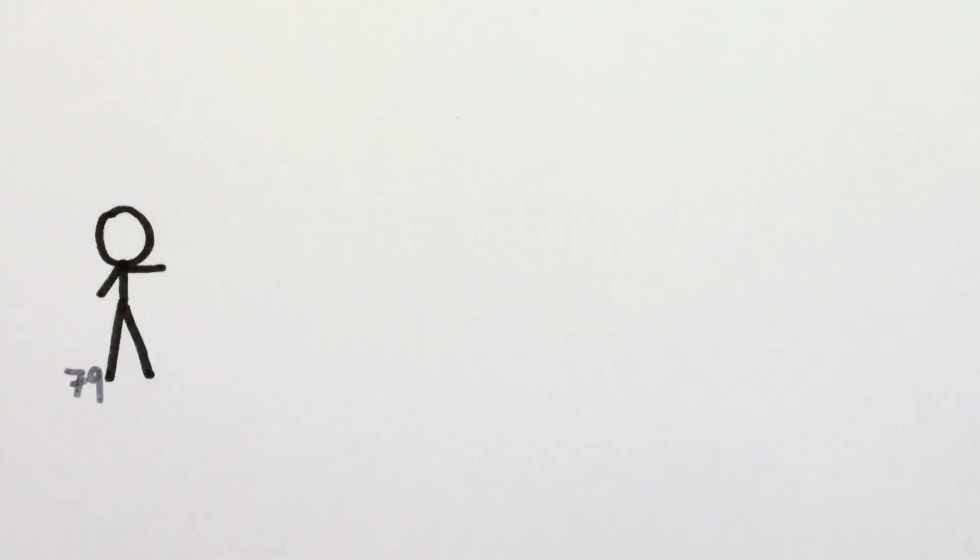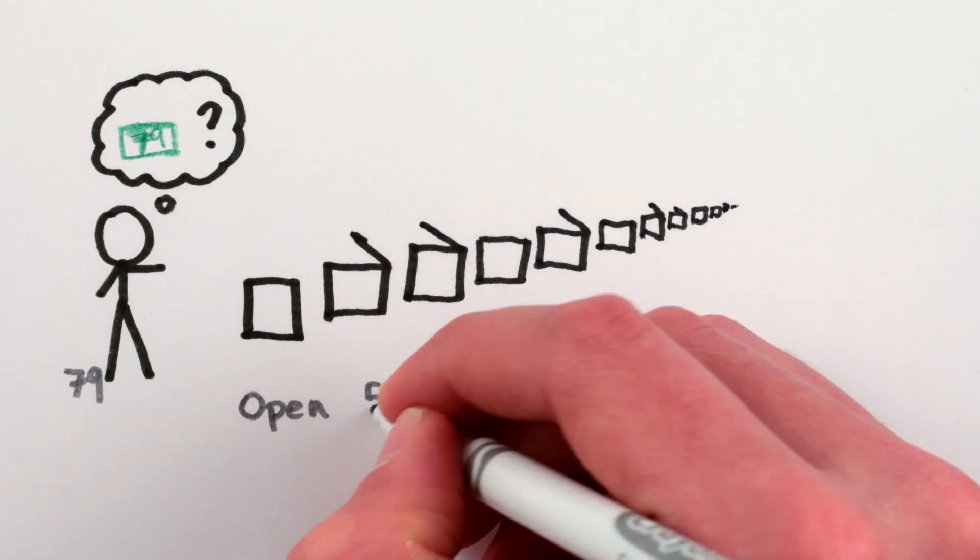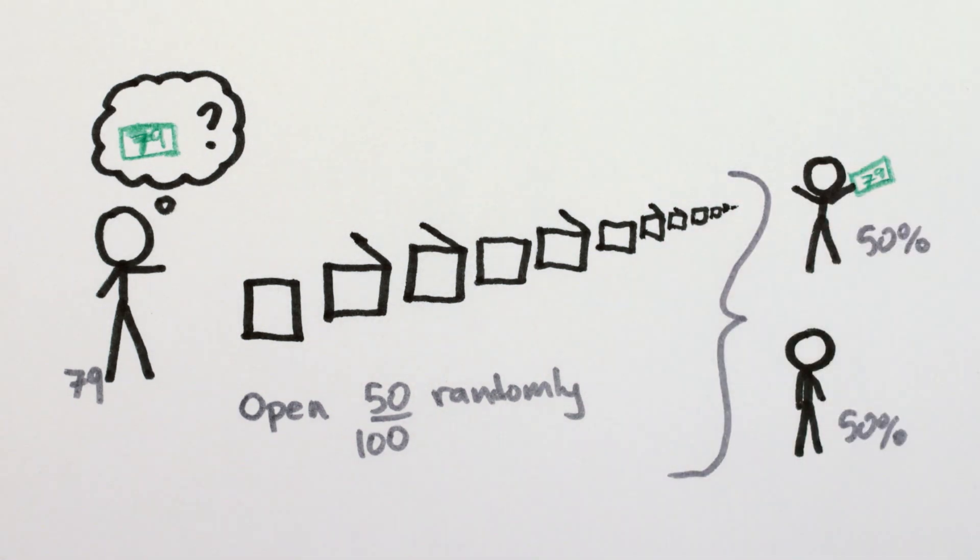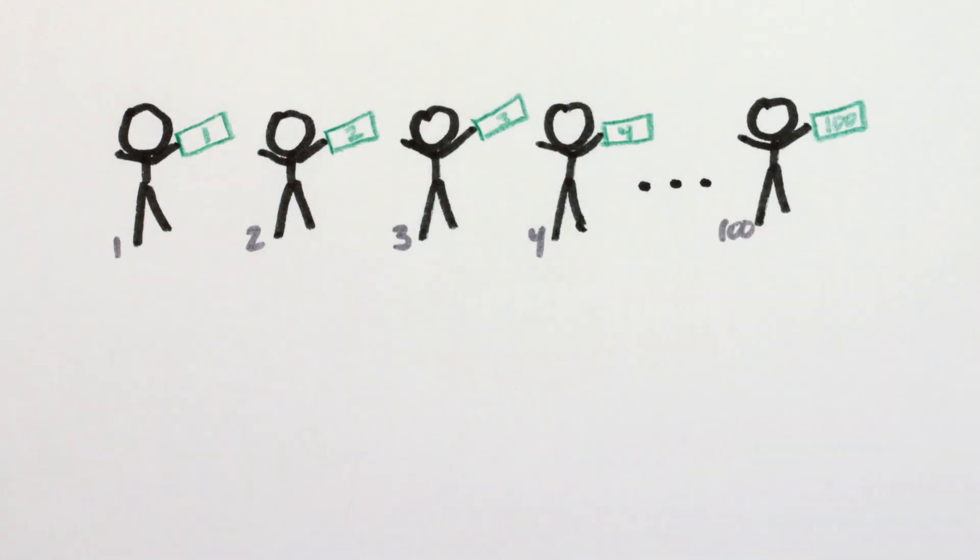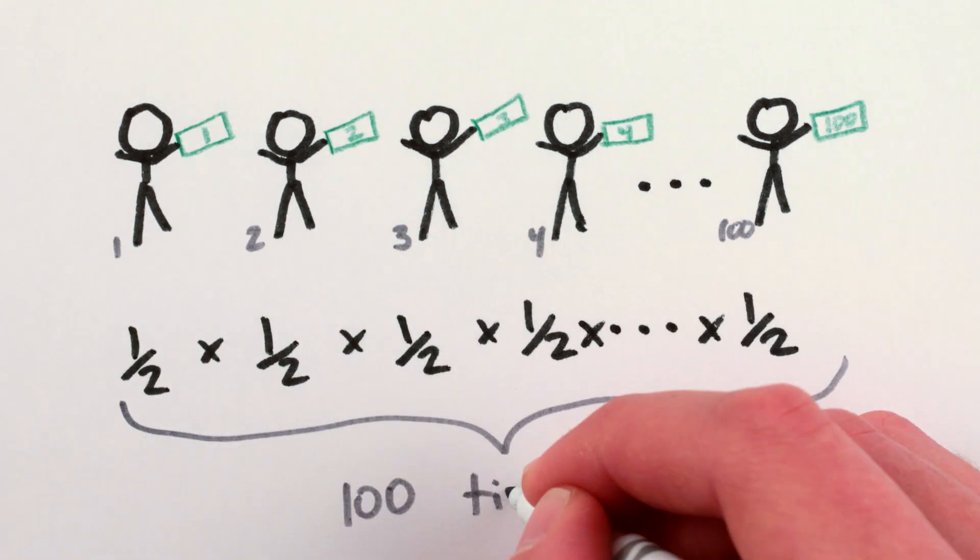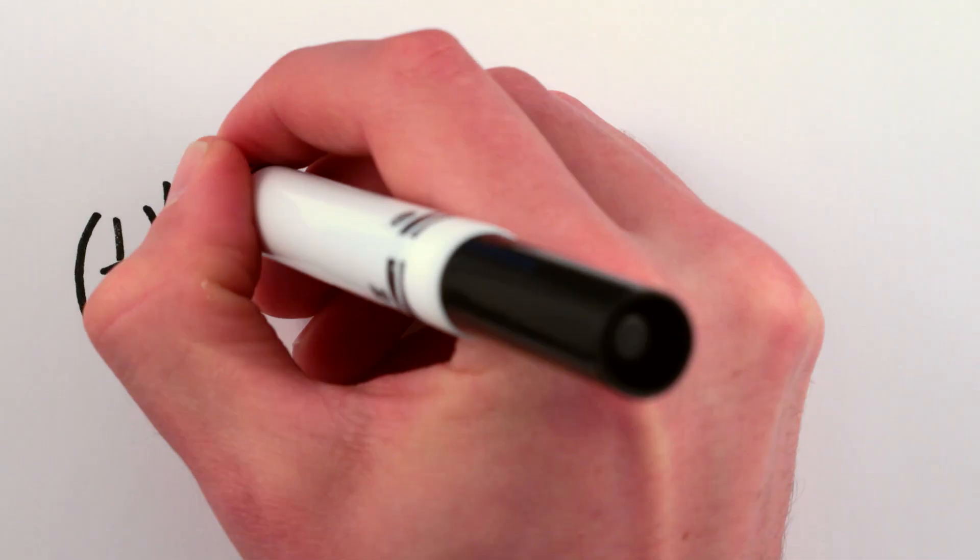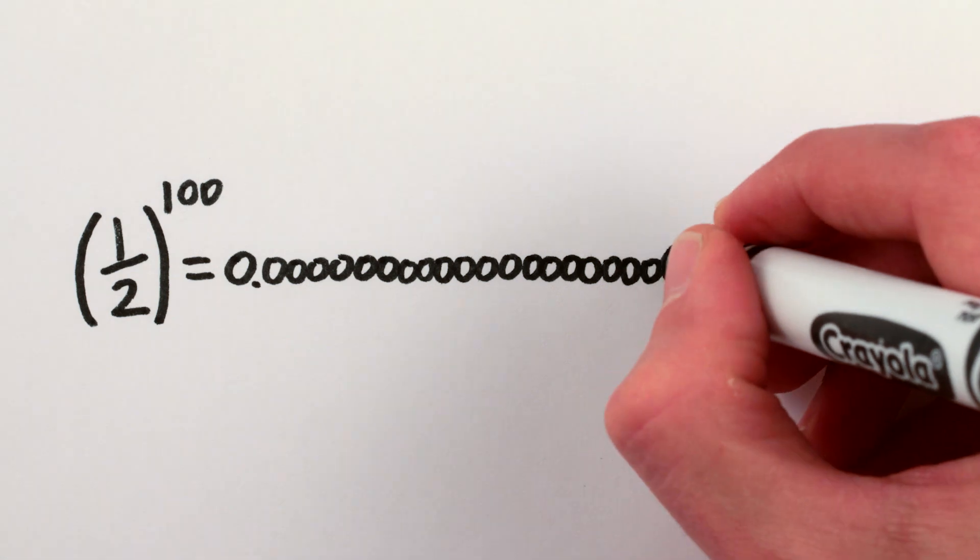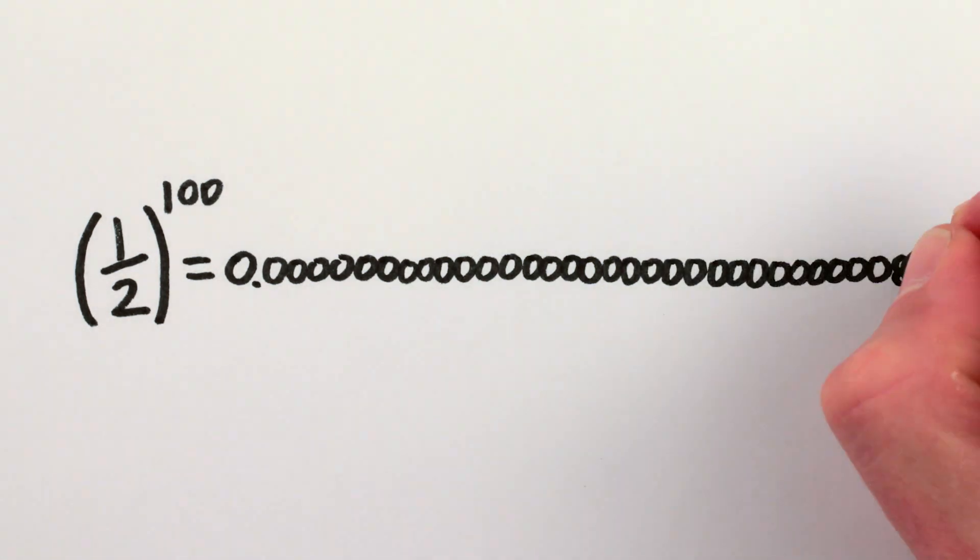If all 100 of you gamblers just choose 50 boxes at random when you go into the room, the likelihood of each of you finding your bill is one half, so the probability of all of you finding your bills and winning the whole game is half times one half times one half 100 times, and one half to the power of 100 is about 0.0000000000000000000000008.